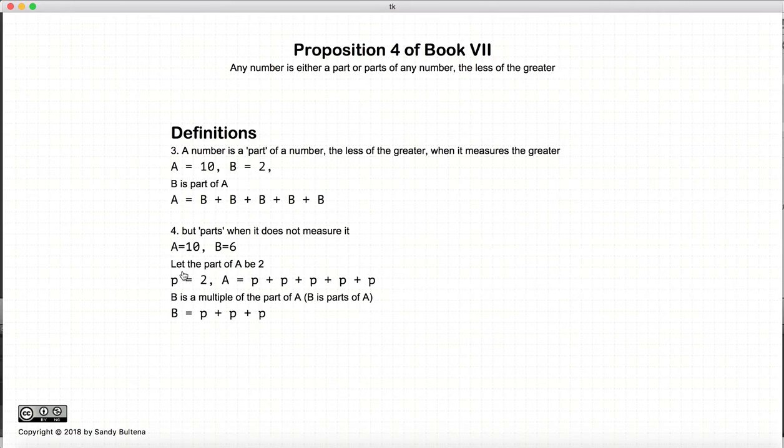So, again, let's do this with an example. We have A equals 10, and B equals 6. Now, we can let a part of A be 2. So, again, we have a line, and we divide it into equal parts, and this being one of the parts.